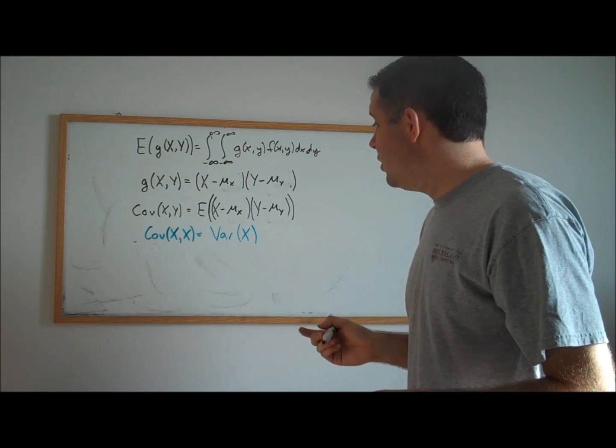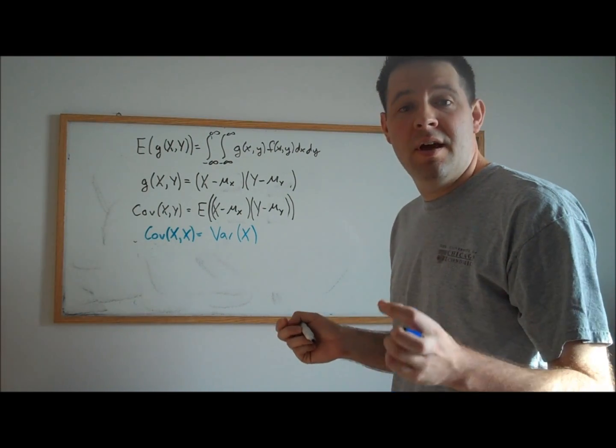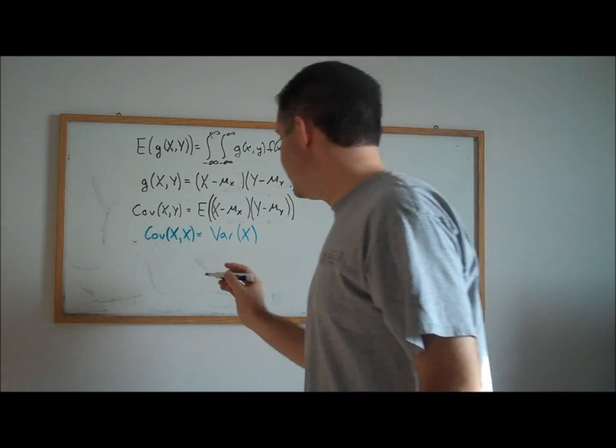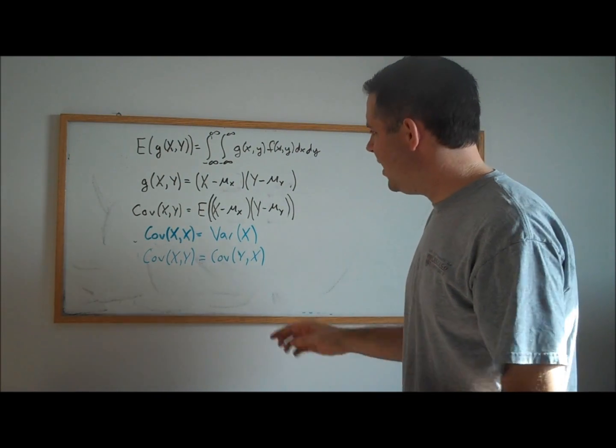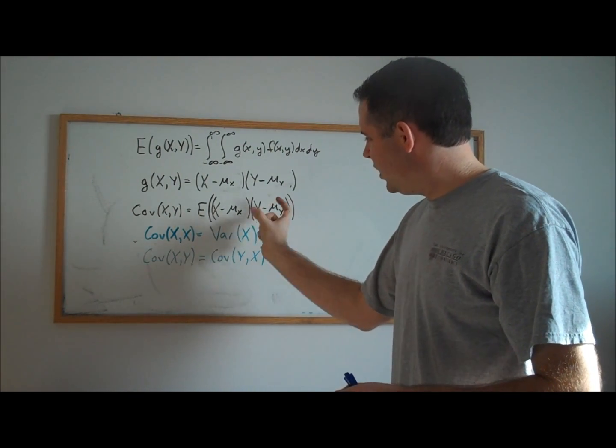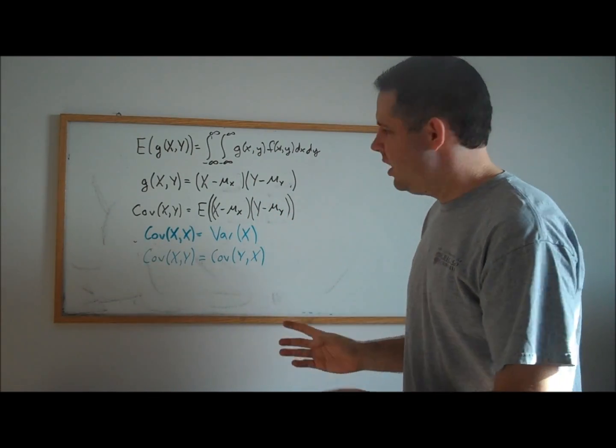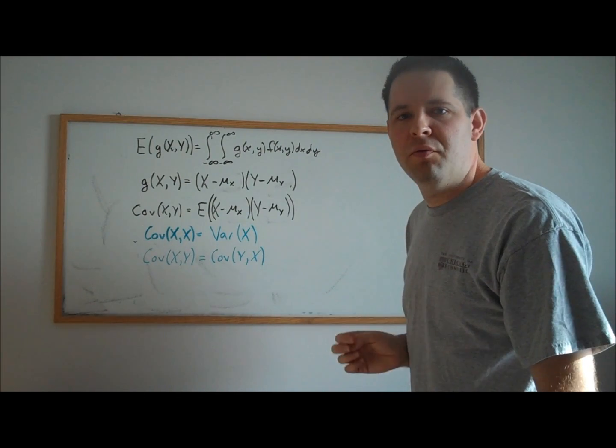A second useful property is that covariance of X with Y is the same as the covariance of Y with X. This doesn't take much to verify except to look at the formula here, and the fact that we can switch the order of multiplication within this expectation basically completes the proof.